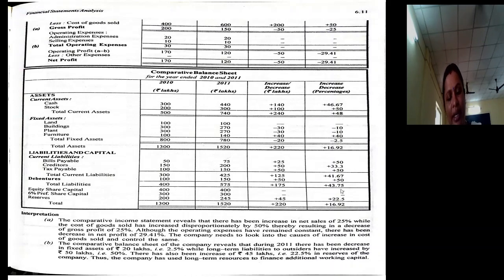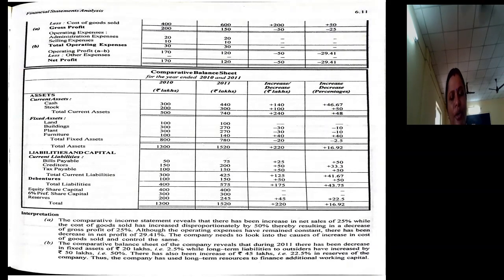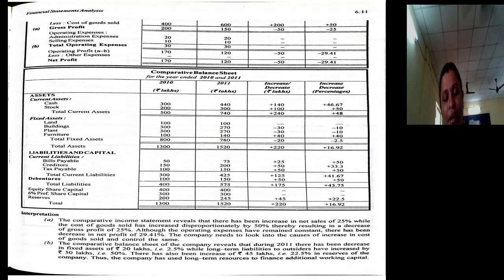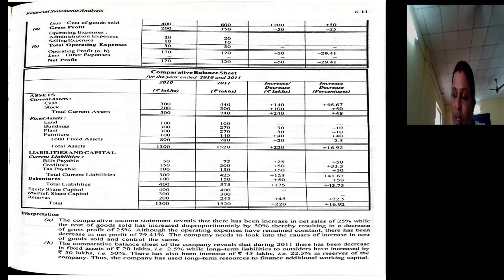After recording each item's increase or decrease, we can comment even if not explicitly asked. The comparative income statement reveals that there has been an increase in net sales by 25%, while cost of goods sold has increased by 50%. The increase in cost of goods sold is higher than the increase in sales, thereby resulting in a decrease in gross profit by 25%. Although operating expenses remain constant, there has been a decrease in net profit of 29.41%. The company needs to look at the causes of the increase in cost of goods sold and control it. This is how to give the interpretation.